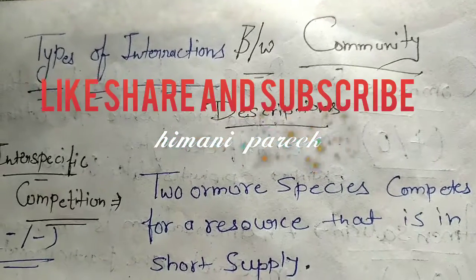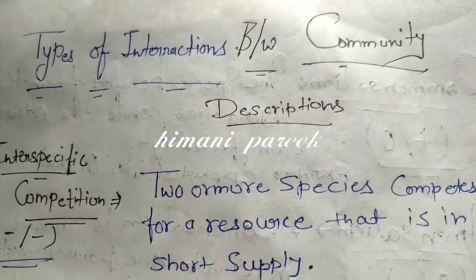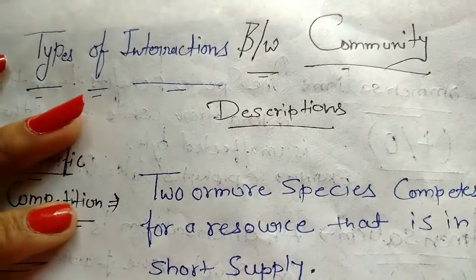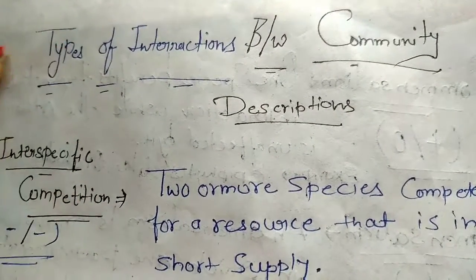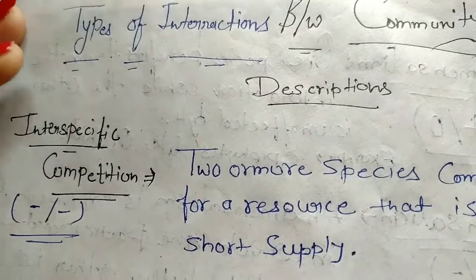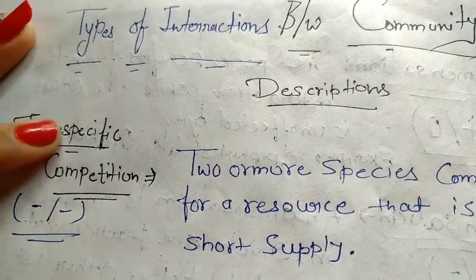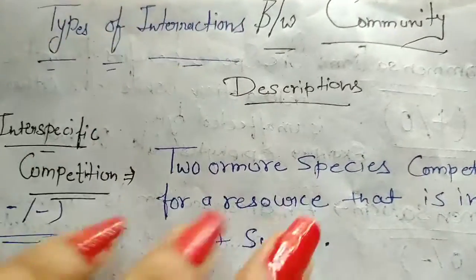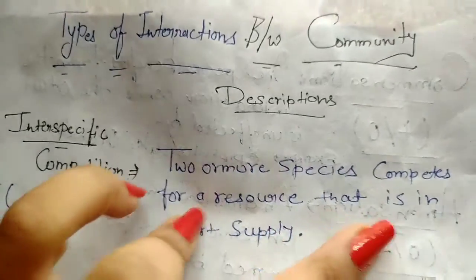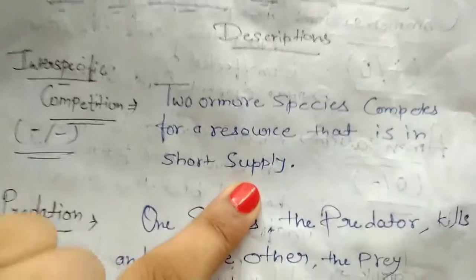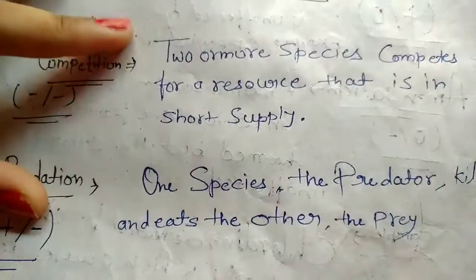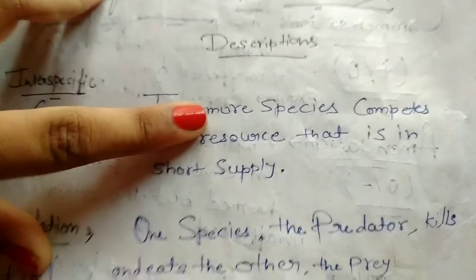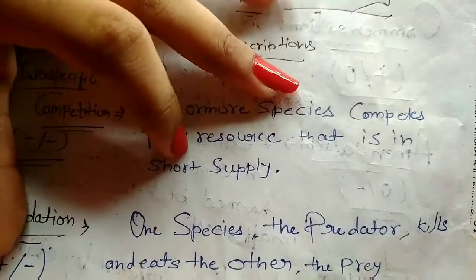Hello, first of all please like, share and subscribe to my channel. We are discussing the types of interaction between communities, also called biotic interactions. First, we are discussing interspecific competition. Interspecific competition means two or more species compete for resources that are in short supply. There are two species which need the same resources and they are available in low amounts.